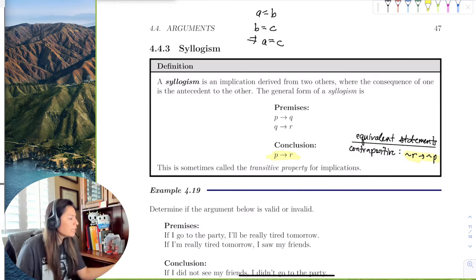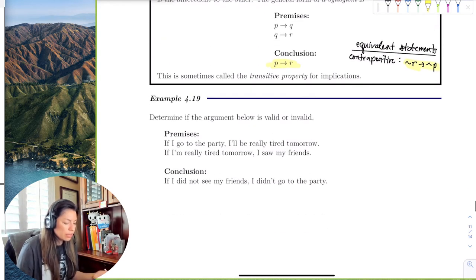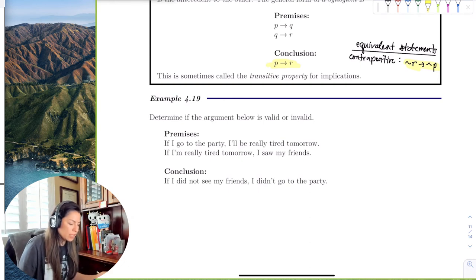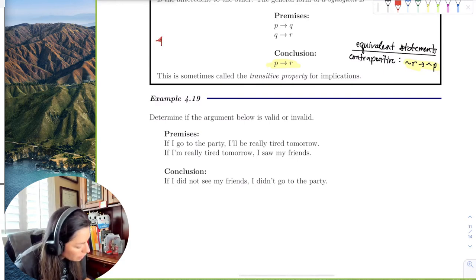So if we looked at something like here, if we want to determine whether this argument is valid or invalid, we could do the syllogism. So especially if you have, once again, the red flag is always when you have three implications.